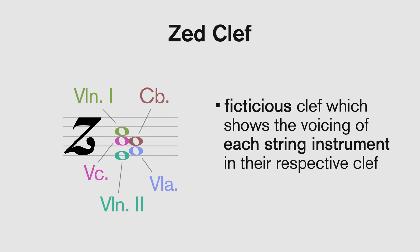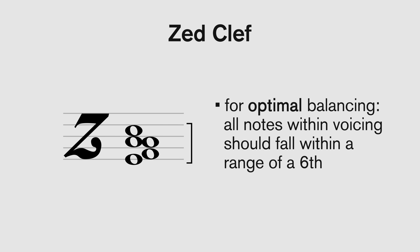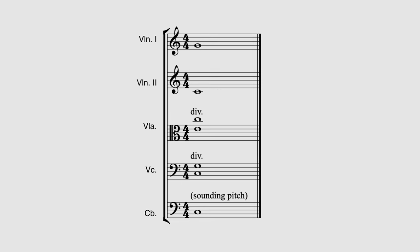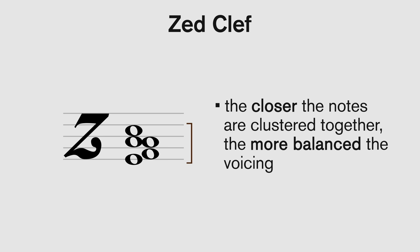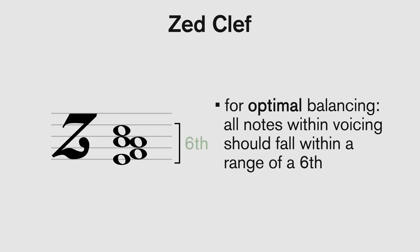When a voicing is plotted on the Z-clef, the closer the notes are clustered together, the more balanced the voicing will sound. To achieve optimal balance, all the notes within the voicing should fall within a range of a sixth when plotted on the Z-clef. Let's take a look at this example which depicts a C-major voicing for strings with some of the instruments divided. At first glance, there seems to be nothing wrong with this voicing. Now let's plot this chord on the Z-clef to see where each instrument's note falls relative to the others — the closer the notes fall together, the more optimal the balance and blend will be. Remember, for optimal balance, keep the voicing clustered within a sixth on the Z-clef.